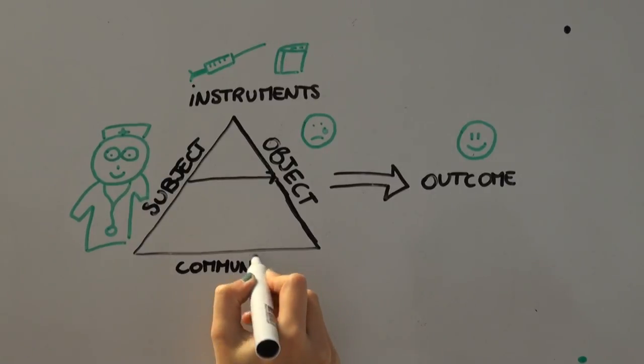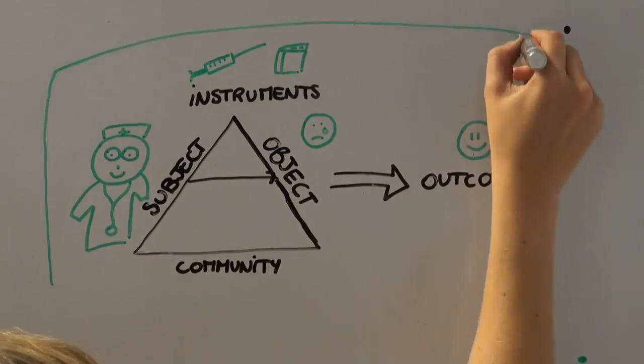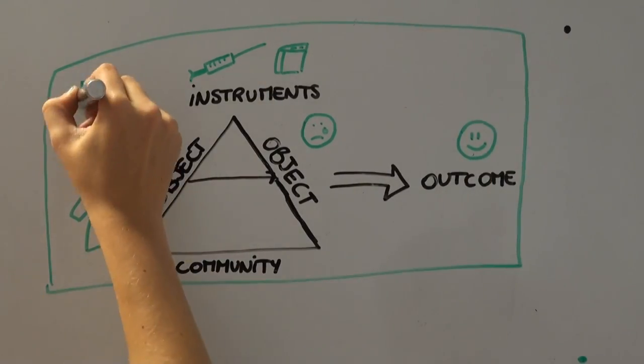Then there is a community in which the activity takes place. This community consists of members with the same objects. In our hospital, the neurology department is a community for the doctor.